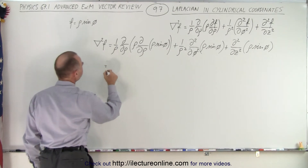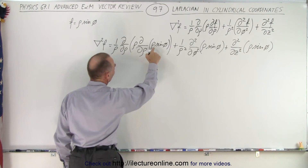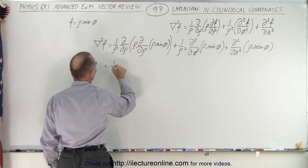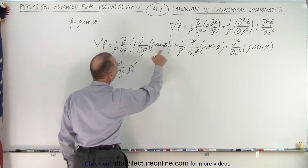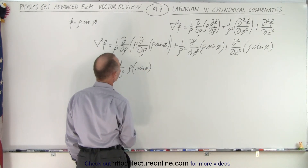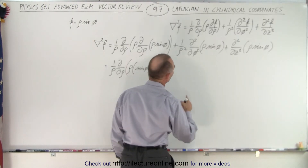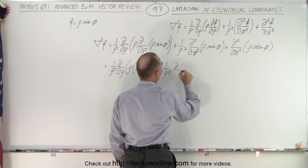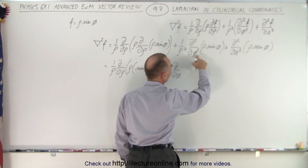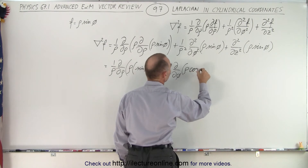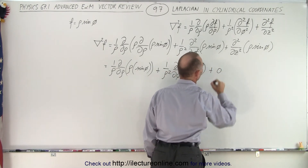Now let's work it out. We take the partial derivative with respect to rho of rho times sine of phi — rho is the variable, sine of phi is the constant — so we get 1 over rho times the result, which is sine of phi. Plus 1 over rho squared times: taking the first derivative leaves another derivative with respect to phi. Rho is constant, and the derivative of sine of phi with respect to phi is cosine of phi, so this gives rho times cosine of phi. The third term with respect to z gives 0, since there is no z dependence.